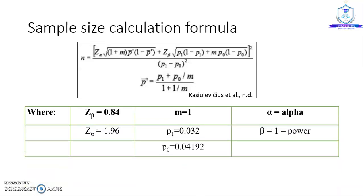Taking the estimates, z-beta at 0.84 and z-alpha at 1.96, we approximated m to be equal to 1 since the two groups will be matched one to one. p1 was set at 0.032 and p0 at 0.04192.